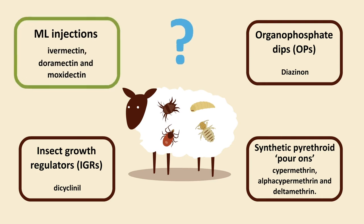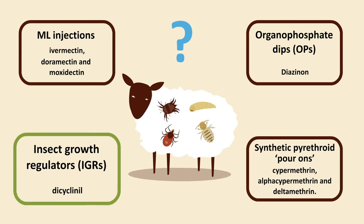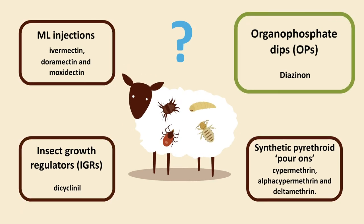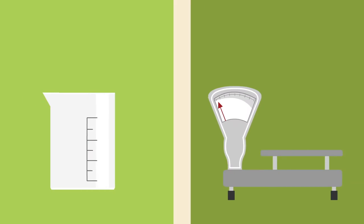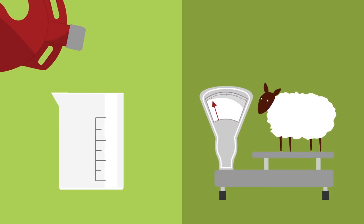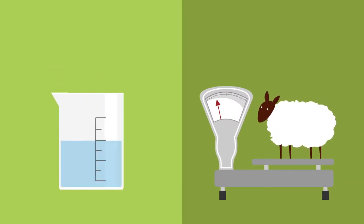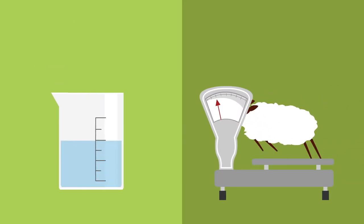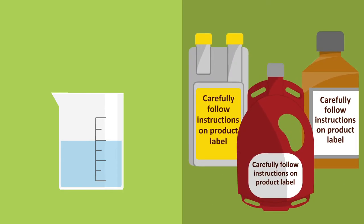Once a diagnosis has been made and the correct product group identified, for any of these products to work effectively, every animal must receive the correct dose. This must be administered correctly, exactly as described on the package information.